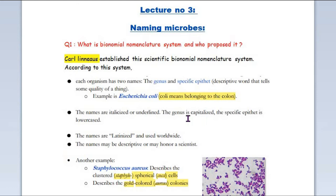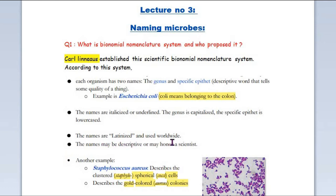Number three is that the genus is capitalized and the specific epithet is lowercase. The genus is written in capital form and the specific epithet is lowercase. Number four is that you use Latinized words, which are used worldwide.